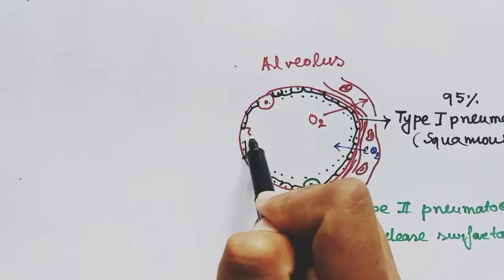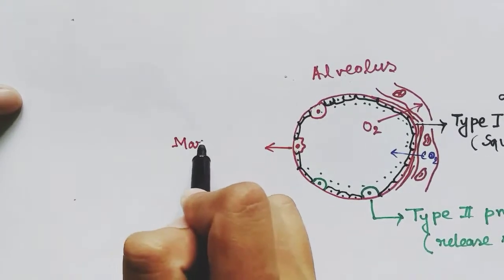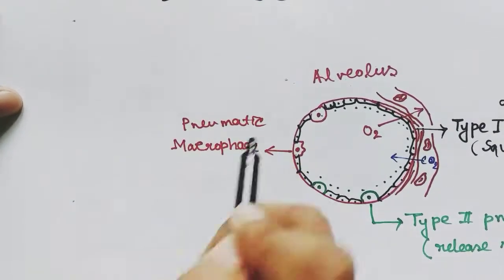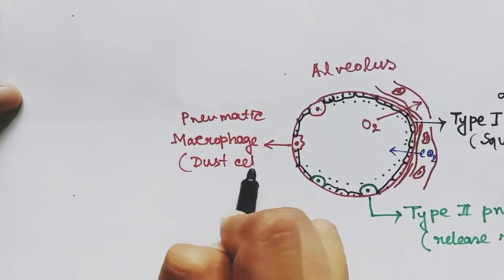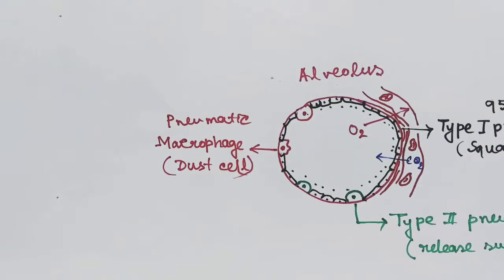Now another kind of cells are macrophages—these are pneumatic macrophages, also called dust cells. These destroy the pathogens in the air present in the alveolus.